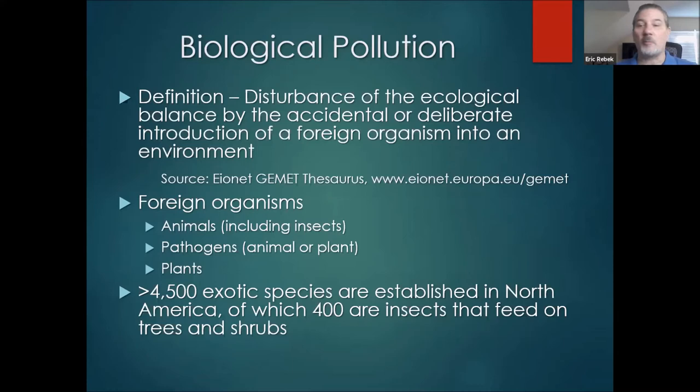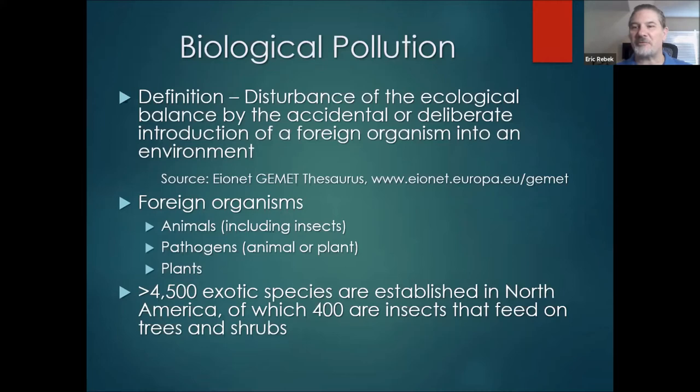To date, we're somewhere around the 4,500 mark of exotic species that have become established in North America. Not all species introduced into a new area become established and therefore become a problem ecologically. The rule is about 10% of all species that make their way across our borders actually become established and therefore become invasive. So 4,500 is still a large number. And 400 of these are insects that feed on trees and shrubs, making this a significant problem for our industry.